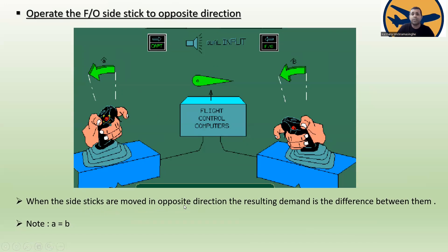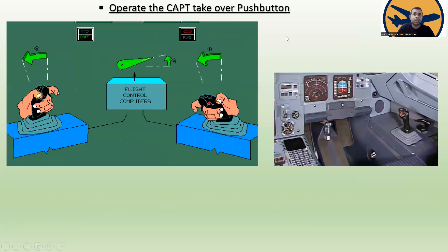When the side sticks are moved in opposite directions, the resulting demand is the difference between them. For example, if angle A and angle B are the same magnitude but opposite, the flight control surface remains neutral.